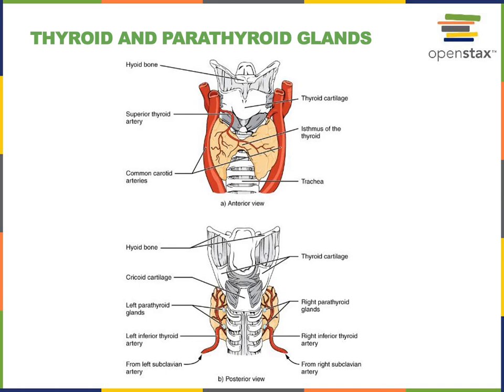The thyroid gland produces the thyroid hormones T3 and T4 that stimulate metabolic rate. The production of the thyroid hormones is stimulated by a hormonal release mechanism in response to TSH, thyroid stimulating hormone from the anterior pituitary. As part of the hypothalamic-pituitary-thyroid axis, the hypothalamus produces thyrotropin-releasing hormone, TRH, to stimulate the anterior pituitary to make TSH, which then stimulates the thyroid gland.